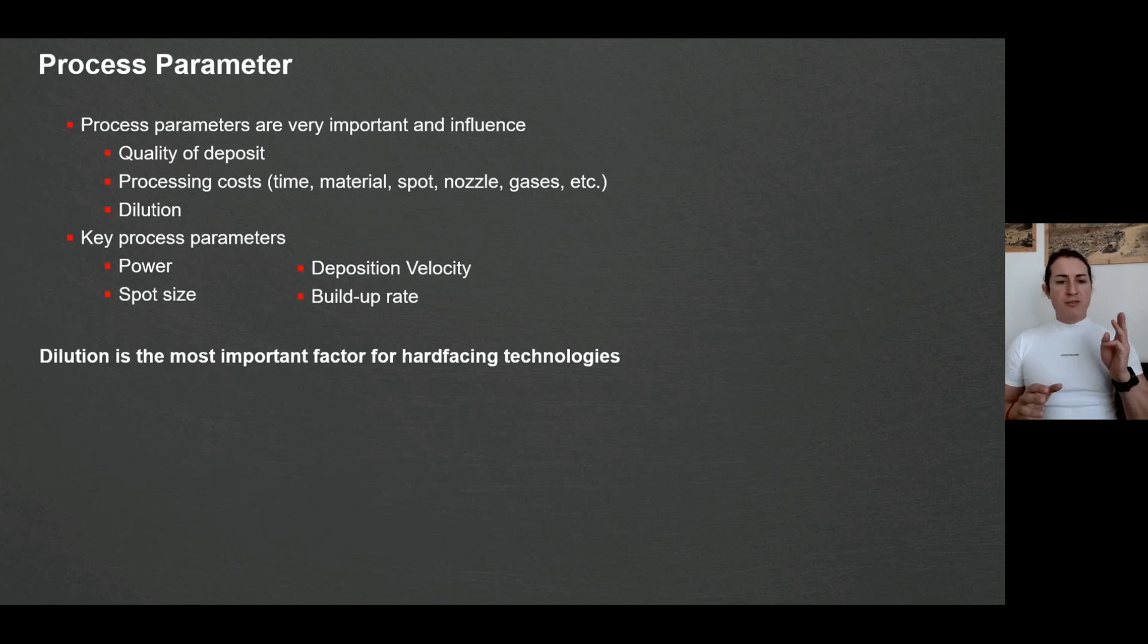So knowing that, there are only four main process parameters which you usually change in your process. It's laser power, sometimes spot size, deposition velocity and build-up rate. All other things like shielding gas, they are usually constant depending of course what materials you use. And knowing that, a simplified model of what you look on to get the process parameters and properties is influenced by the small thing which is called dilution.